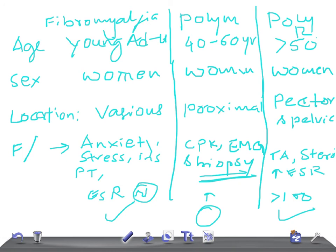For treatment: fibromyalgia is treated with antidepressants and rest. Polymyositis is treated with steroids. Polymyalgia rheumatica is also treated with steroids. Thank you so much for watching — I hope this video helps you. Take care!